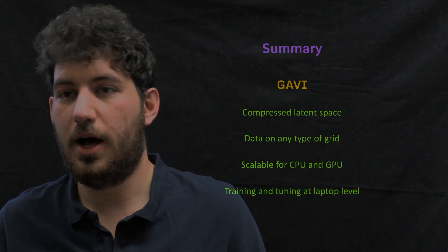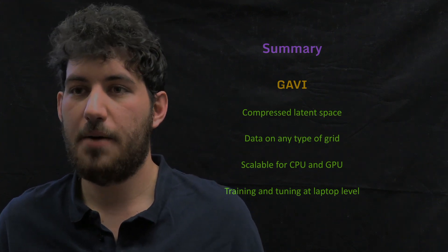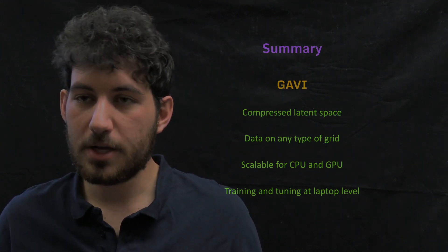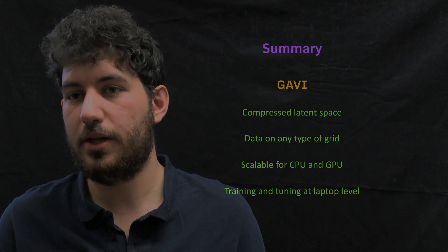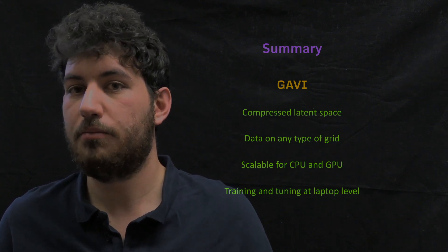So all in all, before finishing the video, I would like to do a bit of summary about the GAVI methodology. The GAVI methodology allowed us to get a compressed latent space of a turbulent fluid flow without losing much energy. We were recovering nearly 92% of energy with only three latent vectors.